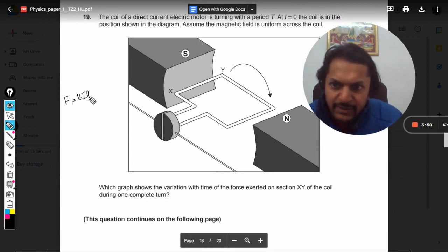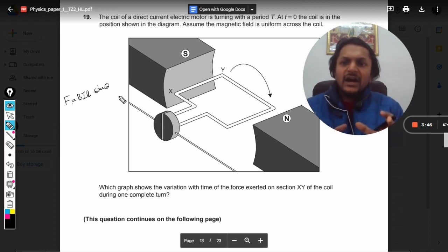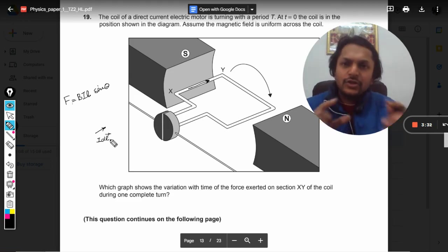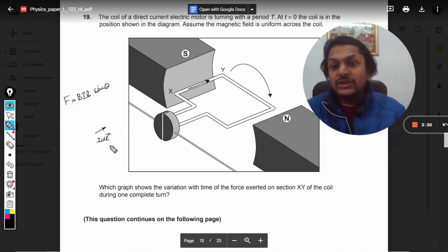My dear students, we know that the magnitude of the force is given by BIL sin θ, and θ is the angle between the wire and the magnetic field. If this is the current element - current element means a very small part which is having current I passing through it and dL is the length of that segment - so this is known as the current element. So θ is the angle between the current element and the magnetic field at that point.